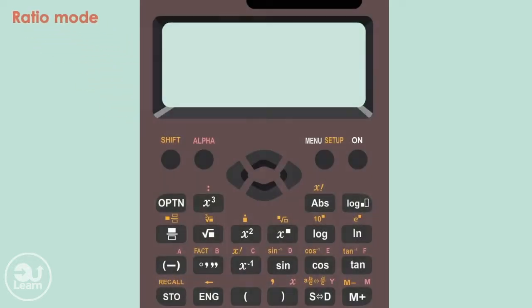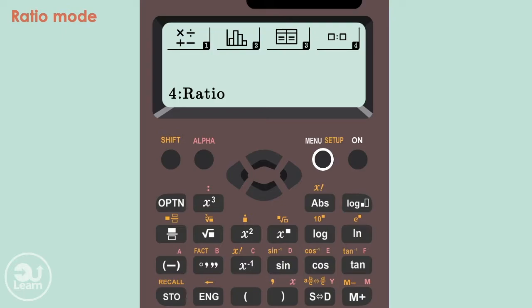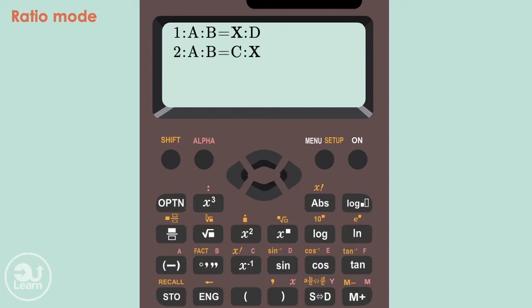To access this mode, press menu and navigate to the ratio mode by using the arrow key or by pressing the associated number. For me, the number is 4. You'll get these two options. To help better explain how these work, let's look at this question.